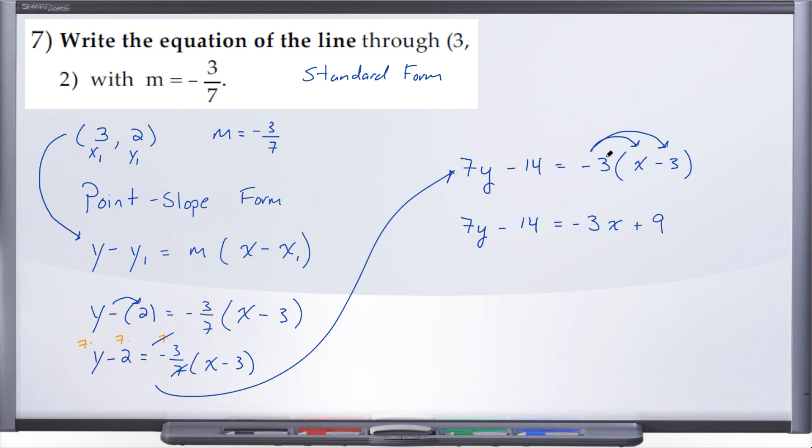And once you distribute your slope through your set of parentheses, you can go to either y equals mx plus b, which is slope intercept form, or you can go to standard form which is what we're going to do, which is ax plus by equals c, as long as a cannot be negative and it cannot be a fraction.